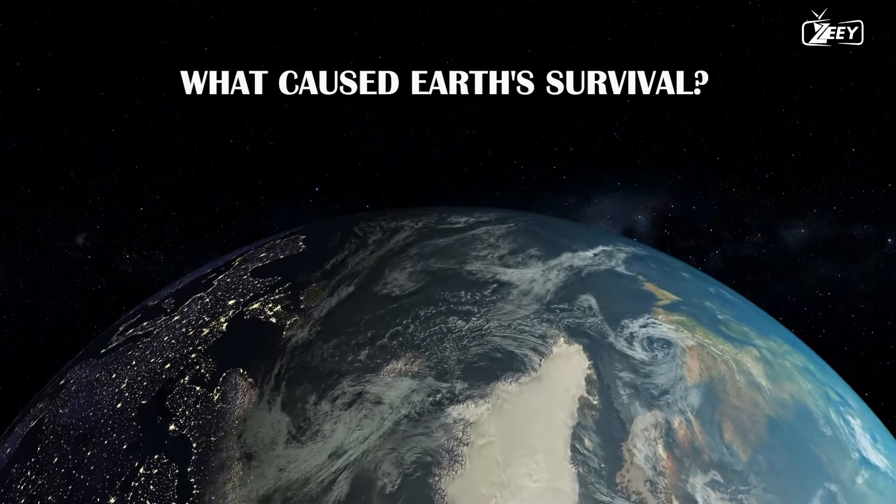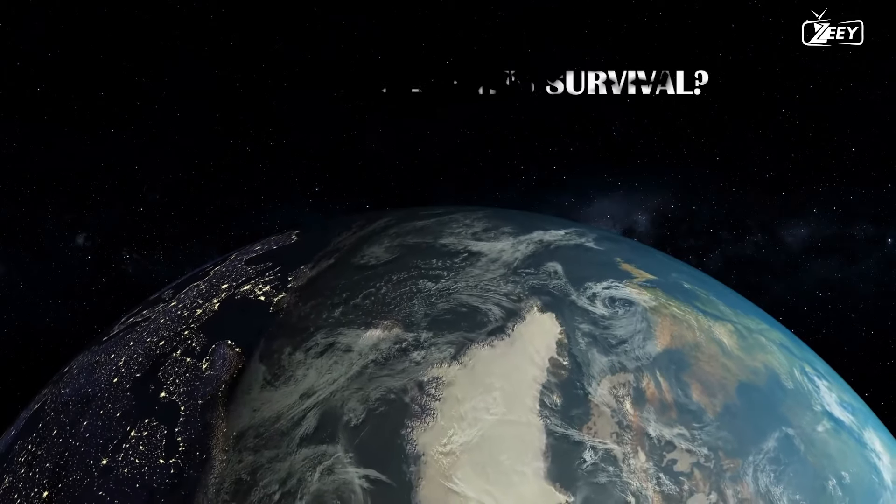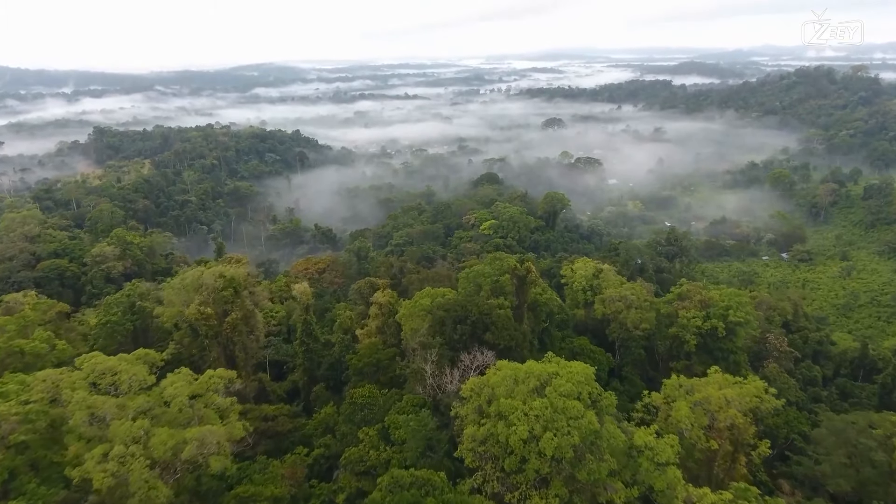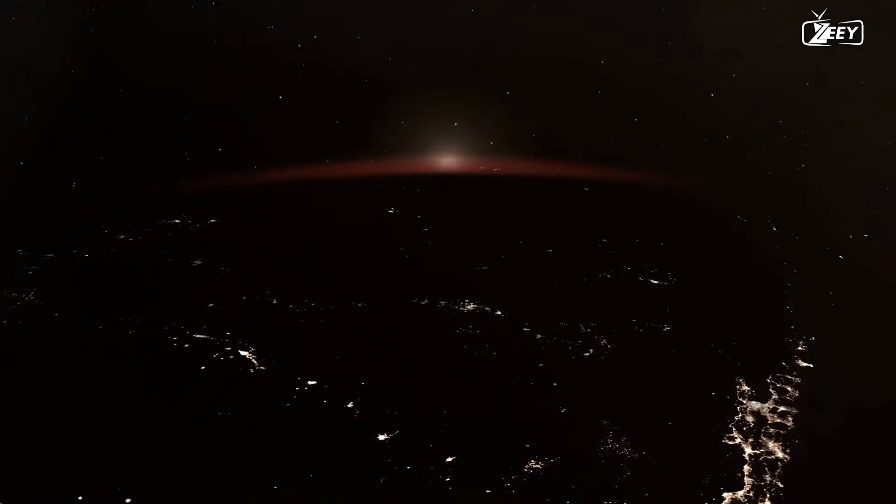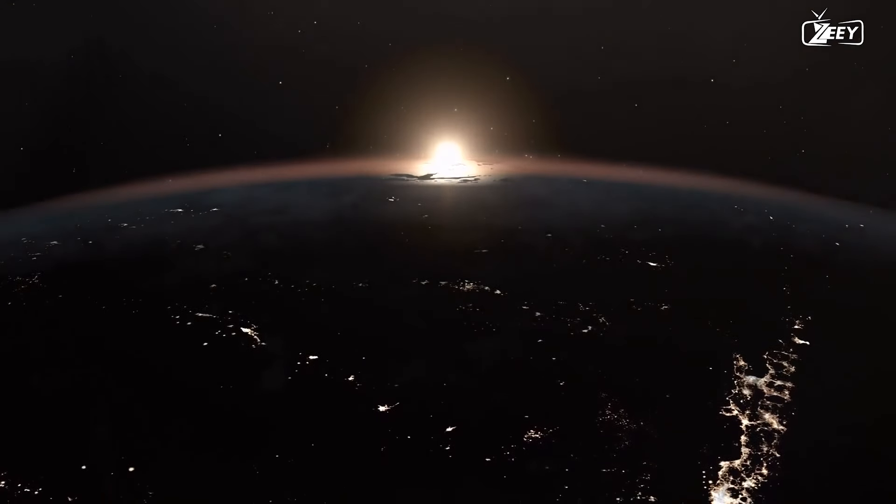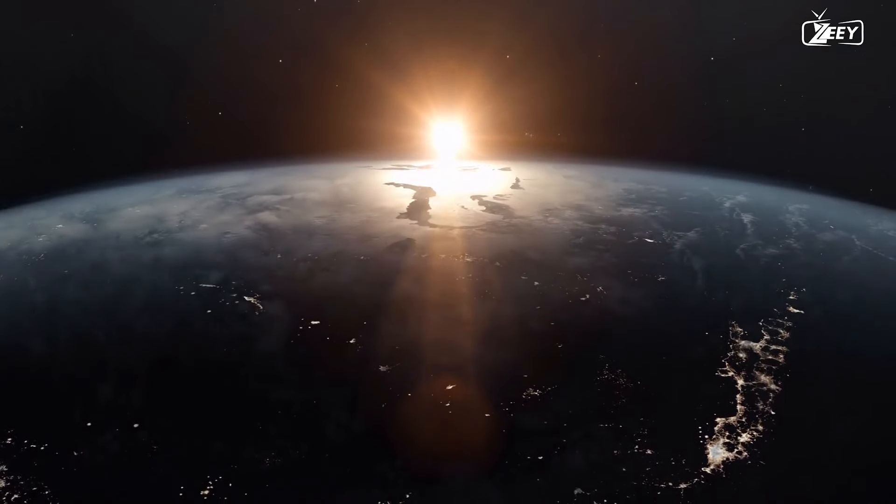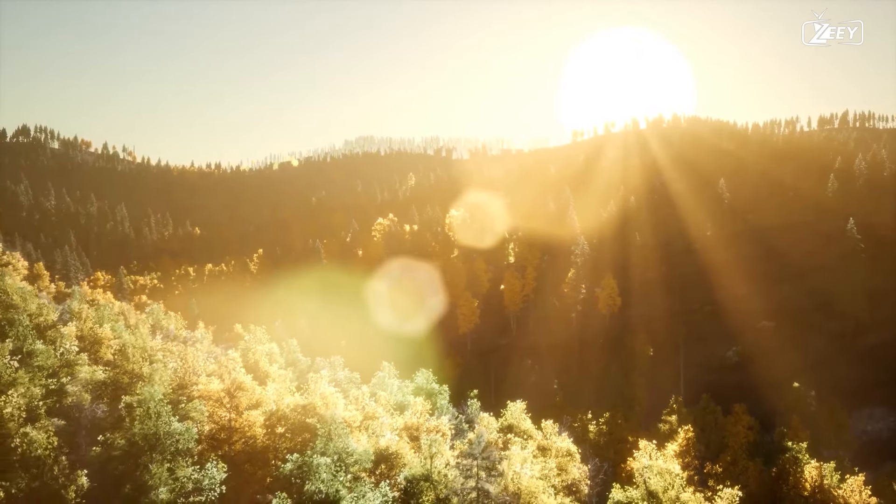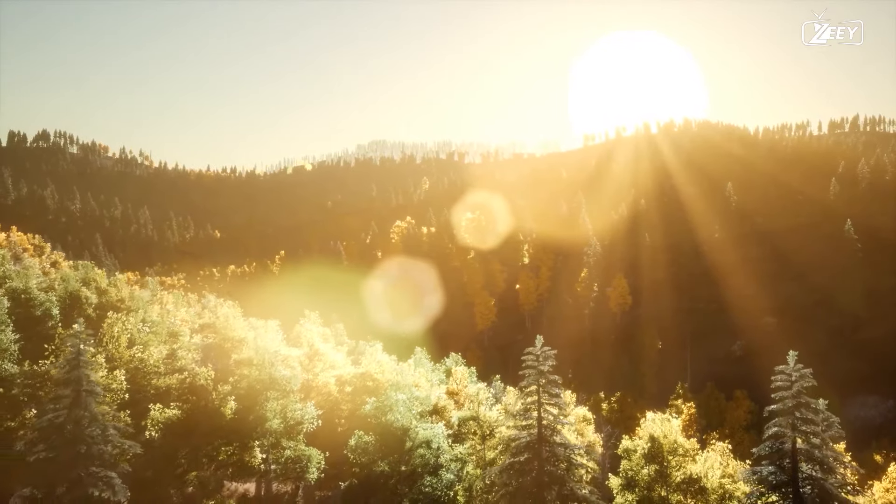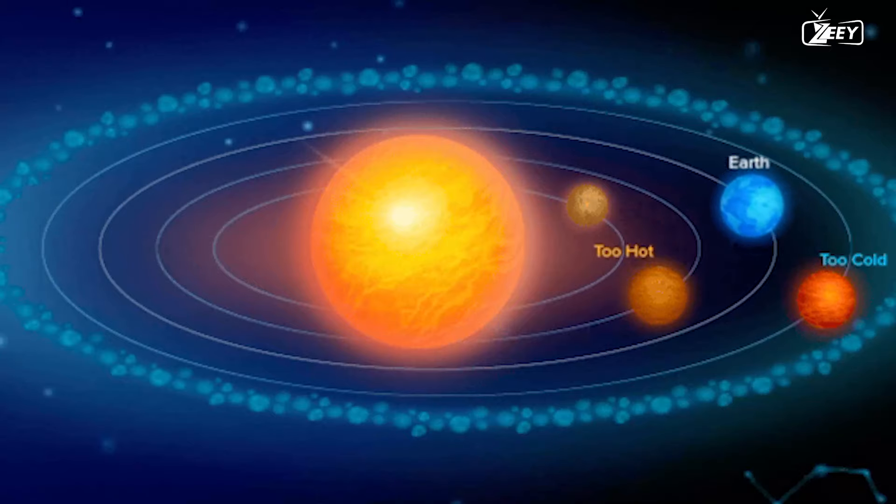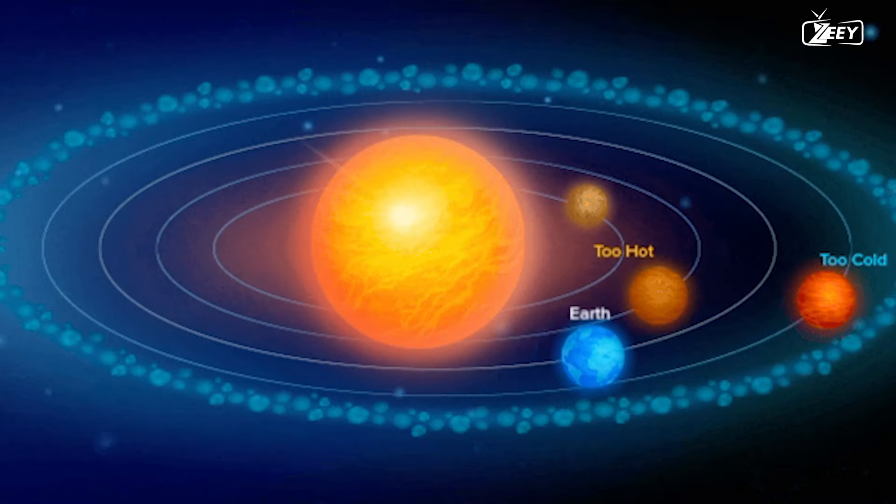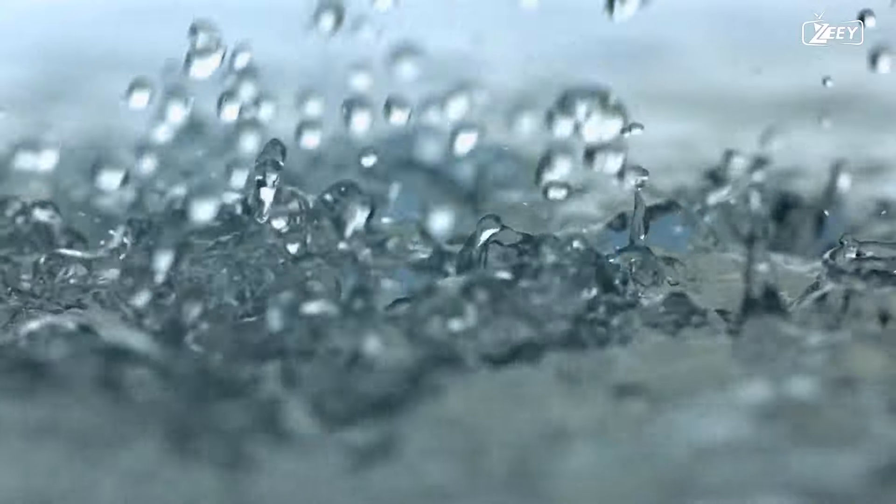What Caused Earth's Survival? The ability of Earth to host life is due to a combination of elements that have allowed it to maintain a stable environment throughout billions of years. These features include its solar distance, atmosphere, gradual geological history, and the stabilizing effects of its huge moon. The Earth's distance from the Sun is one of the key variables that has contributed to its ability to host life. The Earth lies in the Goldilocks zone of our solar system, which is the range of distances from the Sun that are just suitable for the planet to support liquid water, a necessary component of life as we know it.